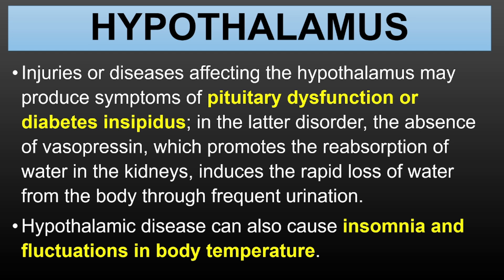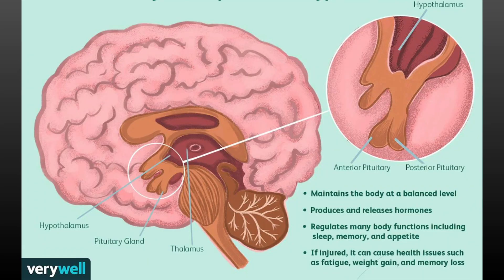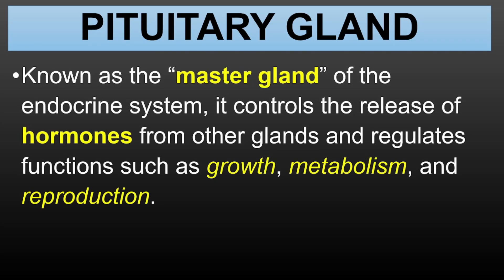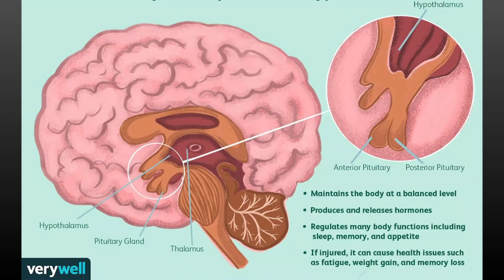Injuries or diseases affecting the hypothalamus may produce symptoms of pituitary dysfunction or diabetes insipidus. In the latter disorder, the absence of vasopressin — which promotes the reabsorption of water in the kidneys — induces the rapid loss of water from the body through frequent urination. Hypothalamic disease can also cause insomnia and fluctuations in body temperature. The pituitary gland, often called the master gland, controls hormones and influences growth, metabolism, and puberty. It releases growth hormones during childhood and adolescence, which is why it's so important for teachers to understand the physical changes students undergo during this stage.